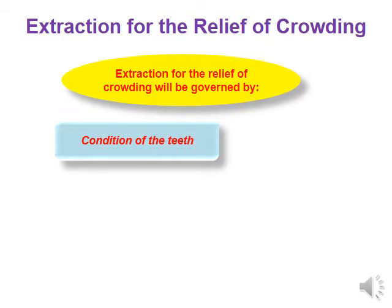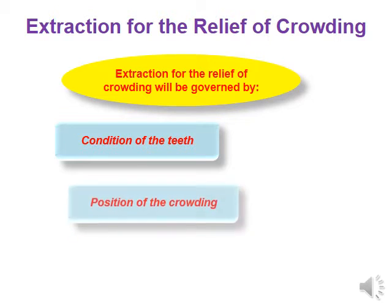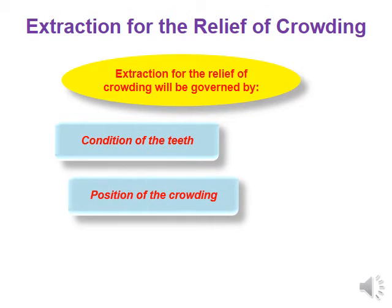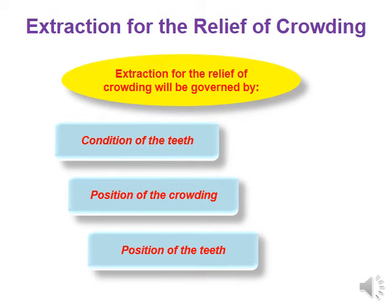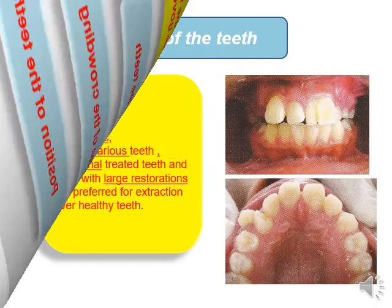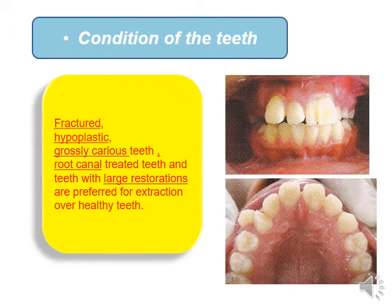Extraction for the relief of crowding will be governed by the condition of the tooth, the position of the crowding, and the position of the teeth. When we have fractured or hypoplastic, grossly carious teeth, root canal treated teeth, and teeth with large restorations, these are preferred for extraction over healthy teeth.